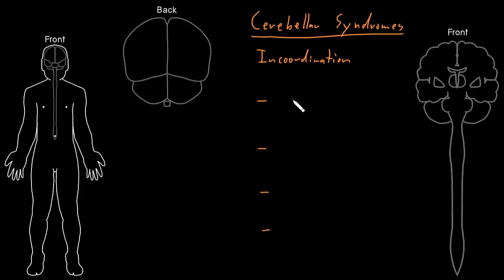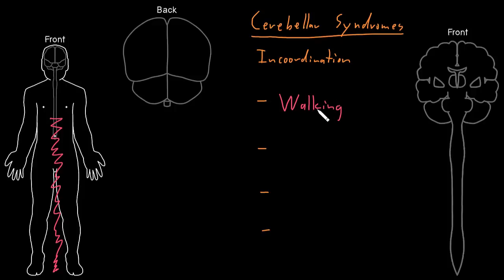The first of these is in-coordination of walking — abnormal walking. These folks will often be staggering around and looking very unsteady, like they're walking on ice. Their balance is poor when they're trying to walk. The part of the cerebellum that plays a big role in coordinating the muscles involved in walking is the middle part of the cerebellum. When we see in-coordinated walking, it's often from a lesion of the middle part of the cerebellum, though it can be from other areas too.